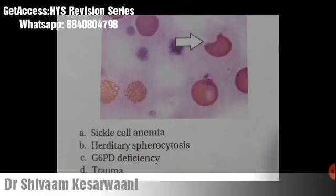In bite cells, only a marginal portion of the RBC is missing. These bite cells or degma sites are mostly seen in oxidative damage or oxidative stress conditions like G6PD deficiency. In G6PD deficiency, uncontrolled oxidative stress causes hemoglobin to denature and precipitate to form inclusions called Heinz bodies. The bites result from removal of denatured hemoglobin by macrophages in the spleen.